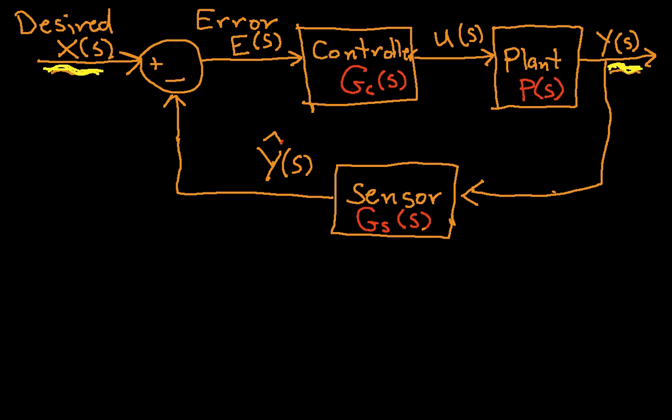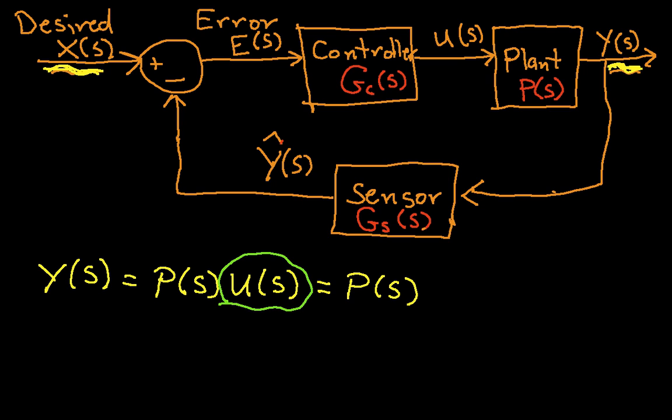So let's, and I'm going to go through this fairly quickly because I don't want to waste a whole bunch of your time with it. Okay, so Y of s is given by the transfer function of the plant times the input to the plant. So the input to the plant, U of s, this guy right here, well, the input to the plant is given by the transfer function of the controller times the error signal.